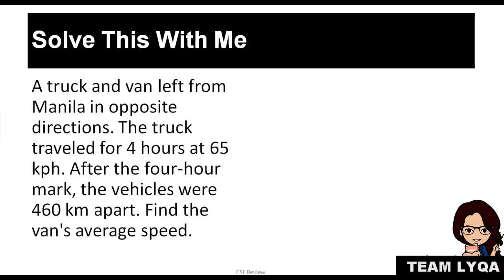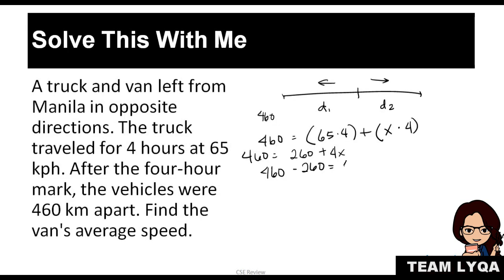Alright, so let's try this. Drawing first. The truck and van in opposite directions again. One goes here, one goes there. You have a first distance, you have a second distance. And when you combine them, they become 460. So 460 equals the formula for distance of this one truck: 65 times 4, plus the formula for the van, you have X because we don't know the speed, times 4. So 460 equals 260 plus 4X. Then 460 minus 260 equals 4X. So we have 200 equals 4X. 200 divided by 4, X is 50. So our answer is 50 kilometers per hour.